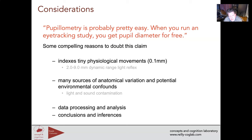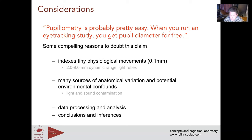Someone recently said to me about pupillometry: 'I think it's pretty easy — when you run an eye tracking study, you just get pupil diameter for free. I don't see why it's so difficult.' This was someone who does eye tracking research but not pupillometry. When you use eye trackers for things like visual world paradigms, you have a vector of left and right eye pupil diameter, and you might argue you can just do a pupillometry study. There are lots of compelling reasons to doubt this claim.